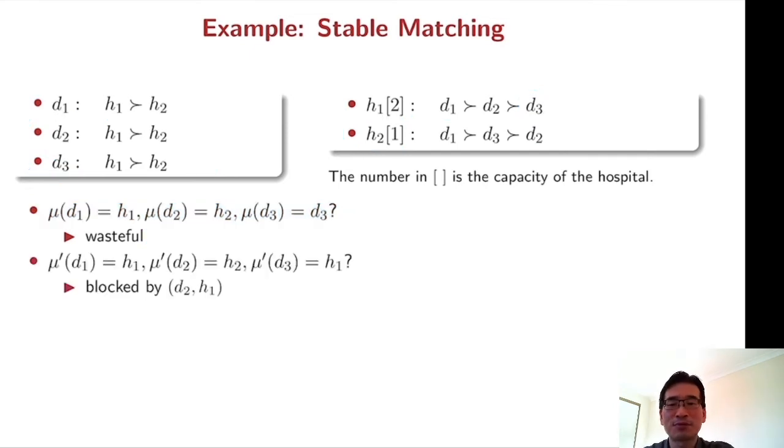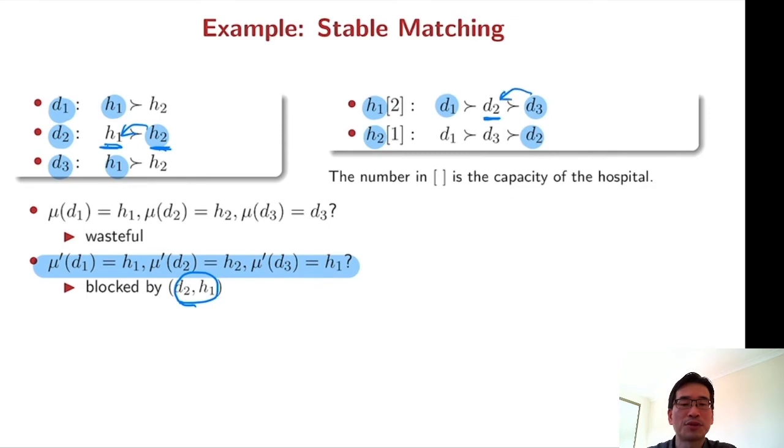So now let's think about another matching here. So D1 and H1 and D2 H2 and D3 H1. This matching is not stable because D2 and H1 can be better off by blocking this matching. So D2 prefers H1 over the current match H2 and also H1 prefers D2 over D3.